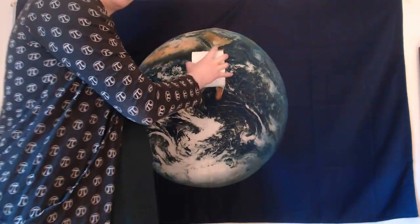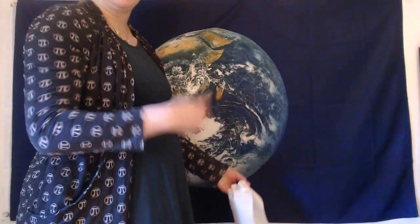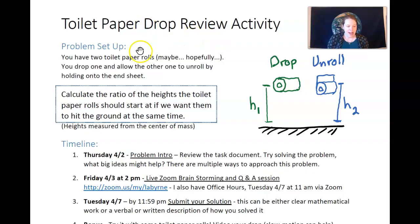So this one is just falling freely under the influence of gravity, and then the other one is unrolling. So your task is to calculate the ratio of the heights of the toilet paper rolls start if we want them to hit the ground at the same time. So we're holding the time that they're in the air constant, but the height that they start at is likely going to be different because different things are happening with their motion.